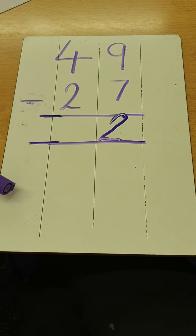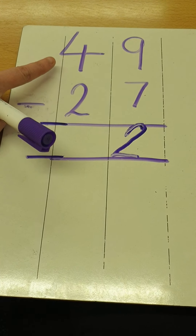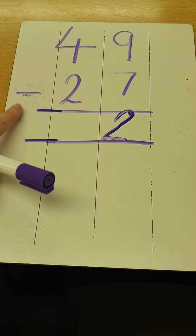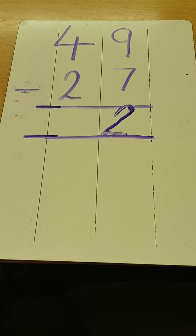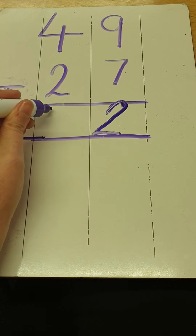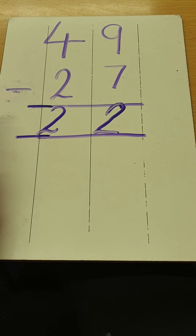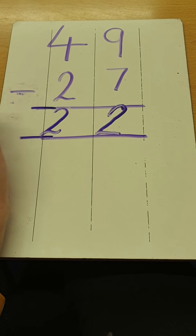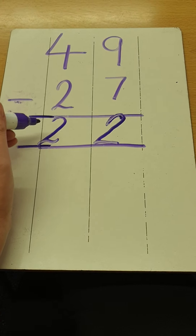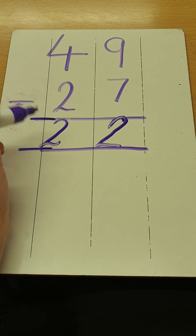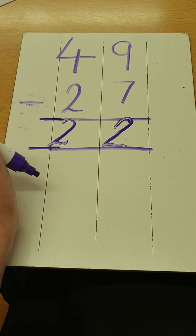Now I've done my ones, I'm going to have a look at my tens. I've got four tens take away two tens. Fantastic, well done — the answer is two tens. So what answer does this make? Fantastic — it makes 22, because we don't say two tens and two ones; we read the number as 22.